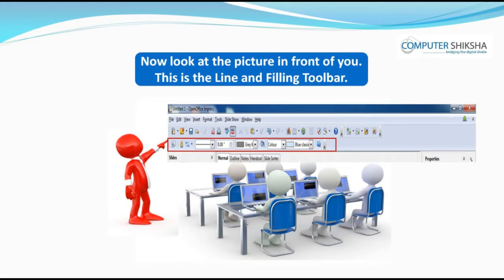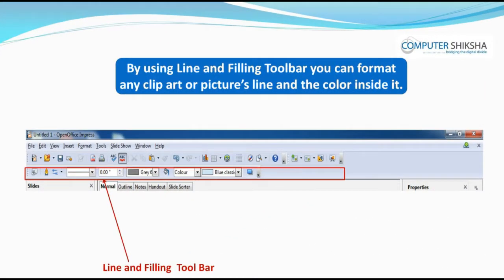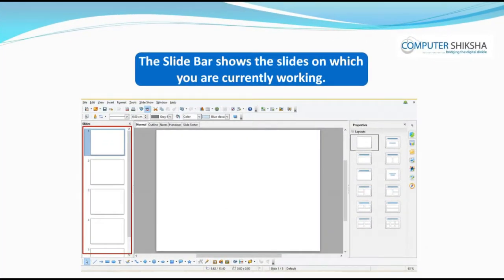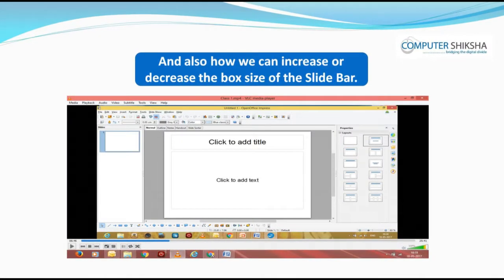Now look at the picture in front of you. This is the Line and Filling Toolbar. By using the Line and Filling Toolbar, you can format any clip art or picture's line and the color inside it. This is called the Slide Pane or Slide Bar. The Slide Bar shows the slides on which you are currently working. Let us now watch the video and learn how we can show or hide the Slide Bar and also how we can increase or decrease the box size of the Slide Bar.